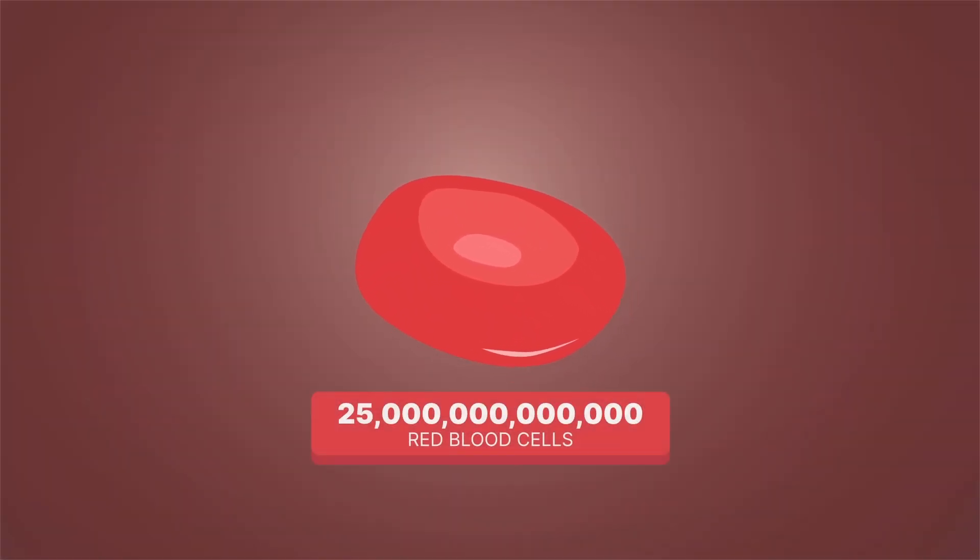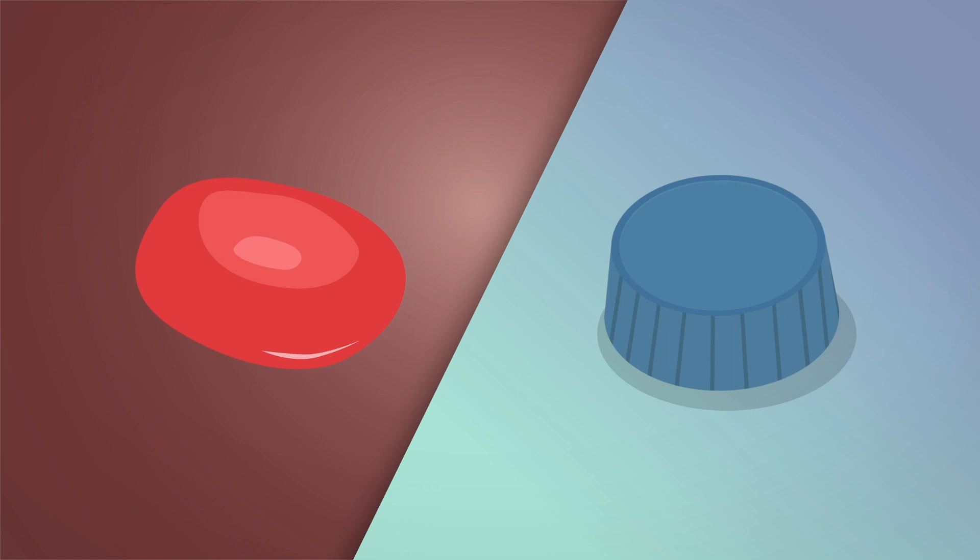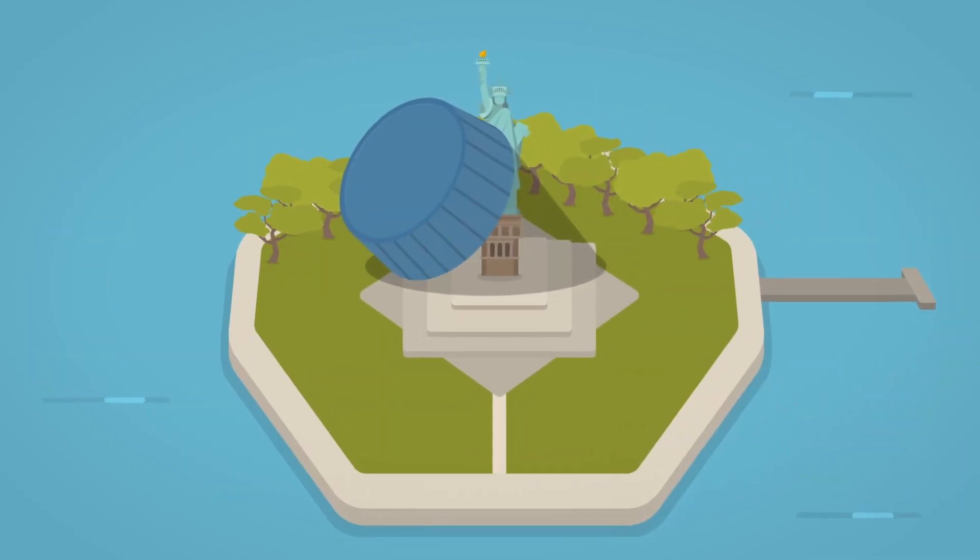25 trillion of these little guys zoom around in your body every day. To give you an idea, comparing a red blood cell to a bottle cap is like comparing the bottle cap to the Statue of Liberty.